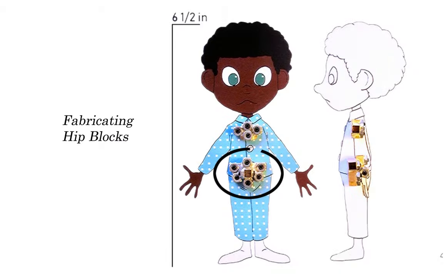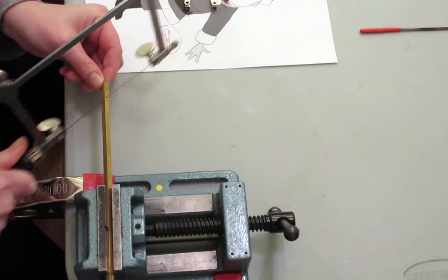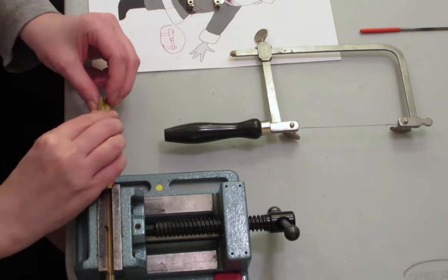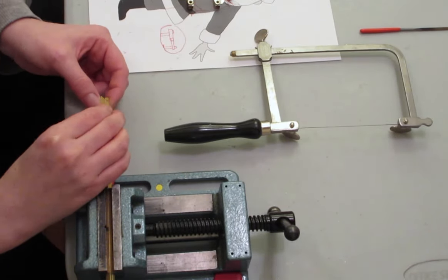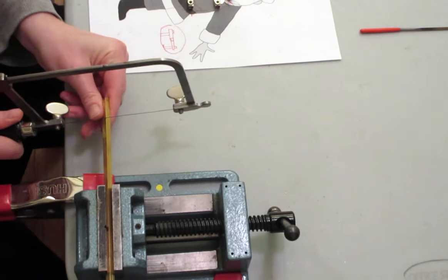In this tutorial, I am going to show you how to make hip blocks. First, start by cutting your K&S square brass tubing to fit the profile of the character design. I have secured the brass tubing in a vise locked down to the table with clamps.